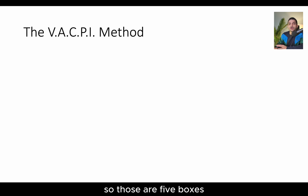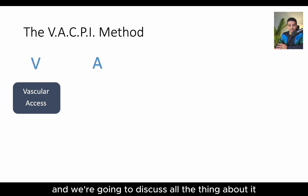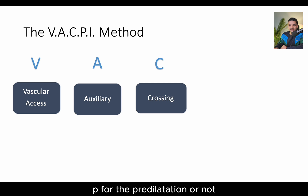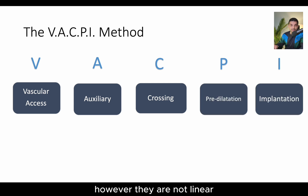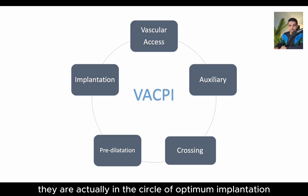So those are five boxes. The V stands for the vascular axis, A stands for auxiliary, and we're going to discuss all the things about it. C is for the crossing, P for the predilatation or not, and I for the implantation. However, they are not linear — they are actually in a circle of optimum implantation.